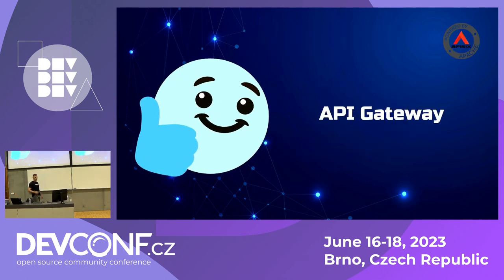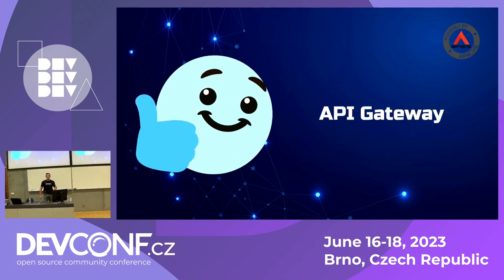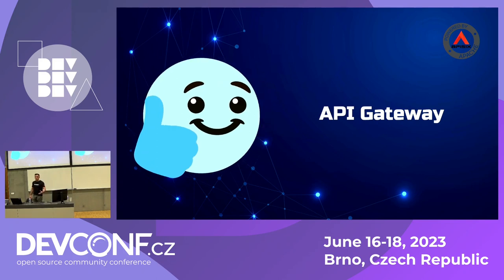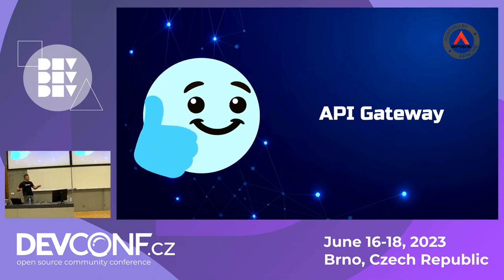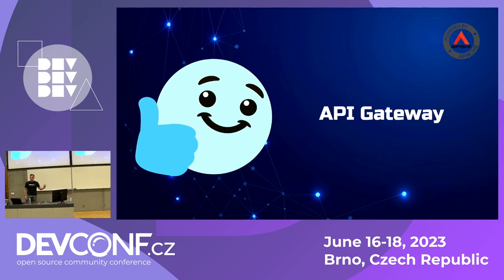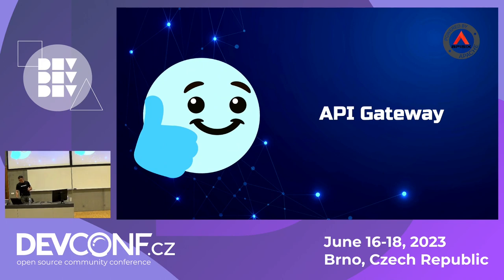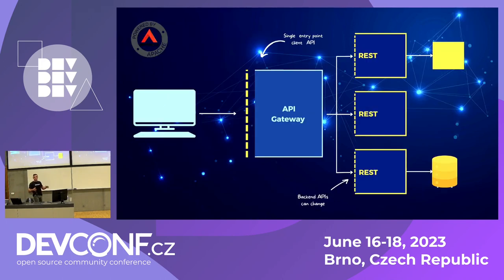Once we understand observability, another question arises: how do you easily observe your APIs? There are platforms, tools, SDKs, and other solutions, but one of the simplest ways is using an API gateway. Nowadays, we build multiple microservices, serverless APIs, gRPC services, and GraphQL — all bringing functionality to client applications.